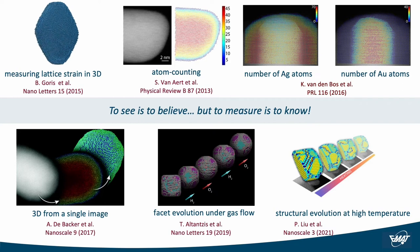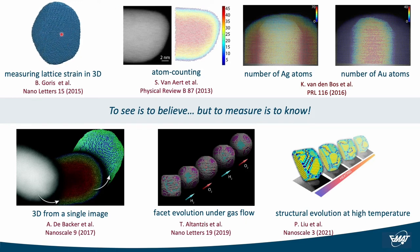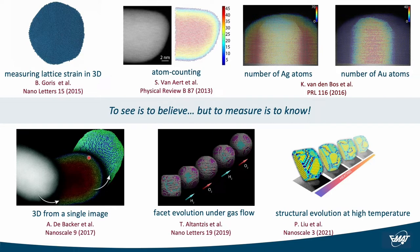To extract 3D atomic models we make use of a quantitative model-based approach, some of the possibilities of which are summarized here. Using electron tomography, atomic scale defects can be revealed in three dimensions. The number of atoms contained in an atomic column can be counted along the viewing direction with single atom sensitivity for homogeneous particles. We are also making progress to count atoms for heterogeneous particles containing more than one atom type. Atom counting, in combination with structure relaxation, enables us to retrieve the 3D atomic structure from a single viewing direction. This requires a lower electron dose compared to conventional tomography, and shows great promise when investigating 3D structural changes, for example under the flow of a gas or as a function of temperature.